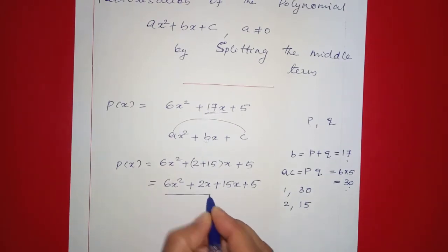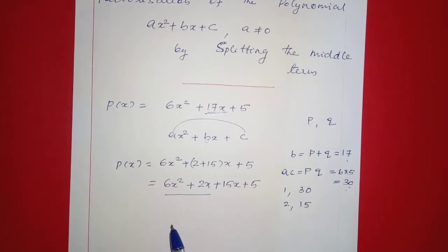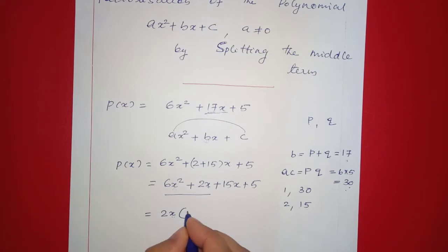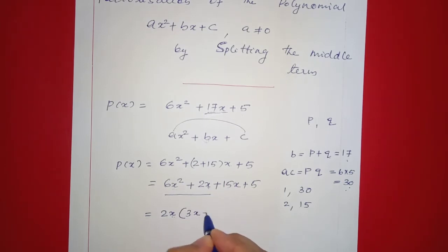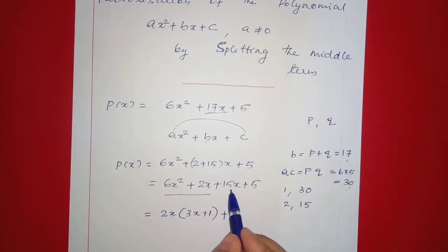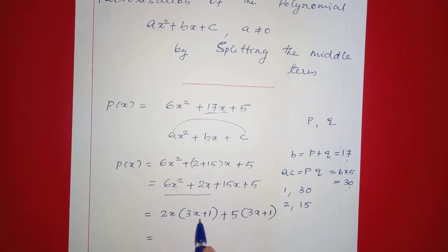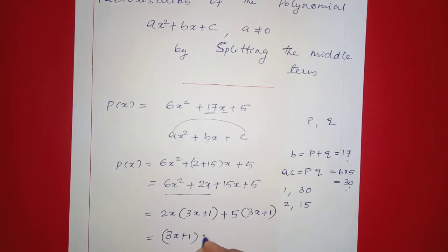Now we have two terms. From 6x squared plus 2x, we factor out 2x to get 2x times 3x plus 1. From 15x plus 5, we factor out 5 to get 5 times 3x plus 1. Since 3x plus 1 is common, we get the factored form. So the polynomial factors as 2x plus 5 times 3x plus 1.